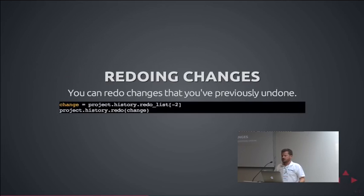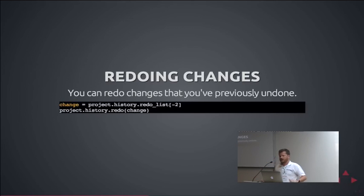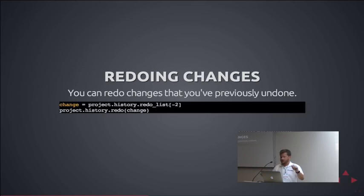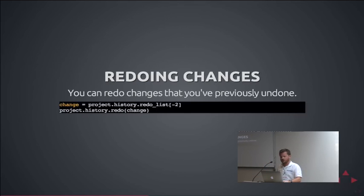Redoing changes is very similar — there's a redo list you can look things up in. Of course you would never do this manually; you want your IDE to ask the history object what's there and display it in a nice window so you can check boxes and decide what to undo and redo. But this is just the API at the Rope level.